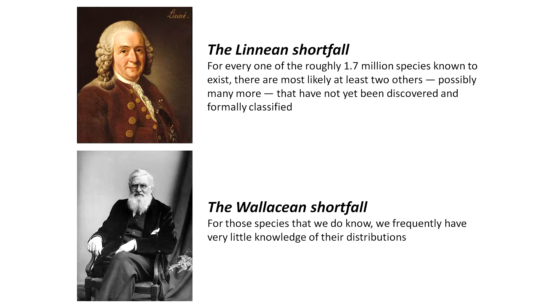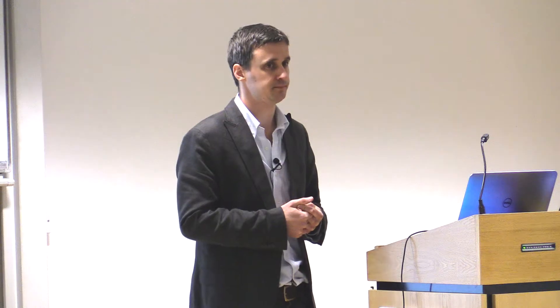The Linnaean shortfall is the fact that we don't actually know that much about biodiversity — what species are actually on the planet. The Wallacean shortfall is named after Alfred Russell Wallace, often referred to as the father of biogeography, who was interested in spatial distributions. For those species that we do know about, we often have very little information about their distributions. These are classic problems whether you're interested in evolutionary processes or biodiversity conservation. What we're going to look at is how we can use ecological niche models or species distribution models to address these two fundamental challenges.